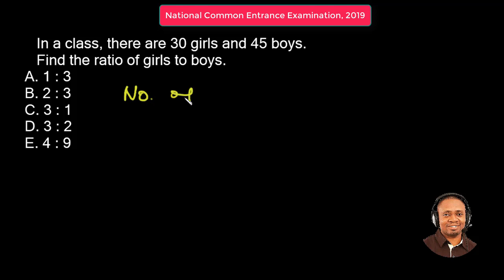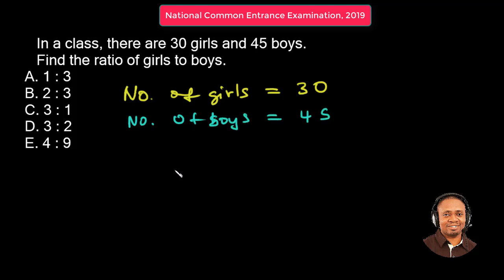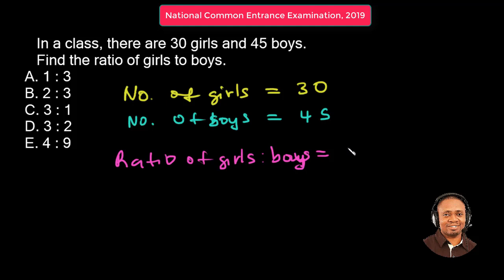Well, given that the number of girls is 30, while the number of boys is 45. And the ratio of girls to boys is simply dividing the girls number, 30, by the boys number. It could go the other way around, depending on how the question comes. If the question is the ratio of boys to girls, you divide the number of the boys by the girls. But in this question, it is ratio of girls to boys.